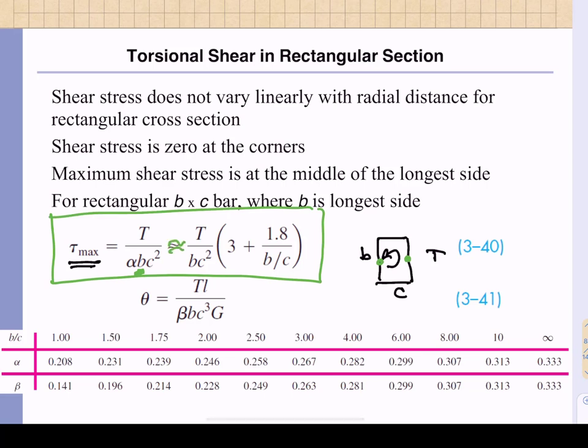Now this approximate form is a little bit easier to work with because in the form that's shown right here, that is the torque divided by alpha bc squared, you have to look up what the alpha is.